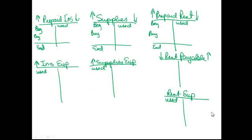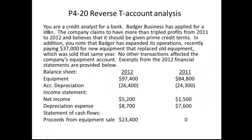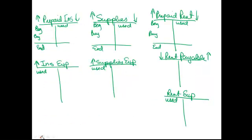So you'll recall that prepaid insurance has a beginning balance of zero, supplies has a beginning balance of zero, and prepaid rent has a beginning balance of zero. And it said that on the income statement, insurance expense was $20,000, supplies expense was $11,000, and rent expense was $14,000.